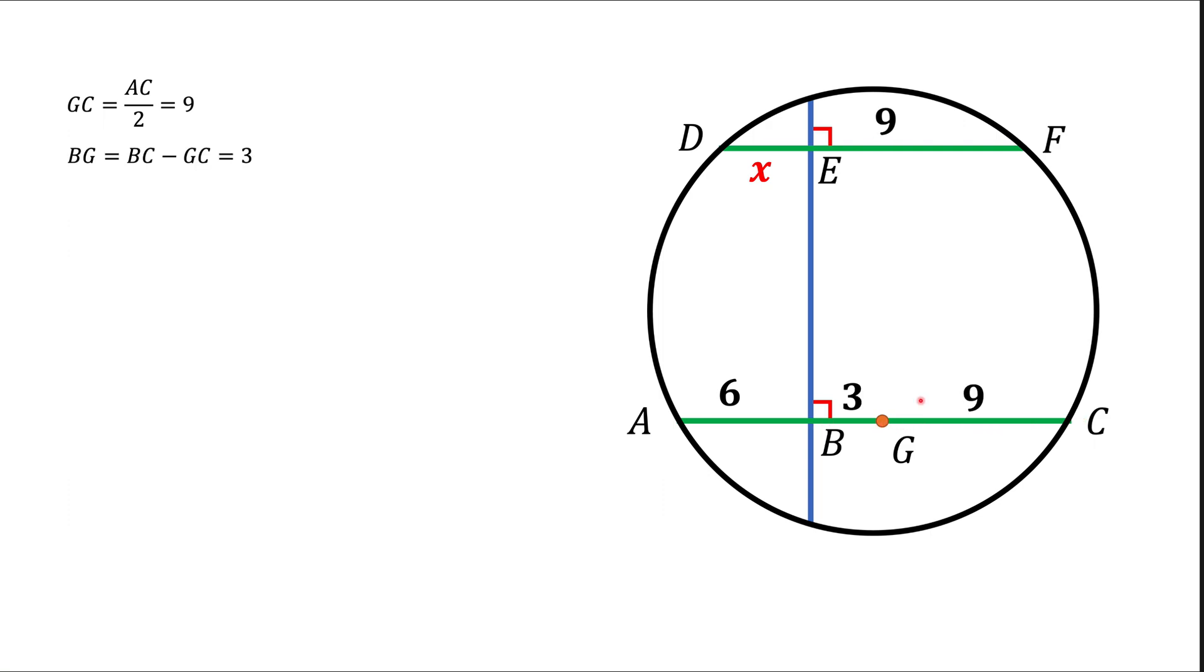The next thing we're going to do, as you probably expect, we're going to draw a line through the point G 90 degrees to AC. That's this purple line GH.